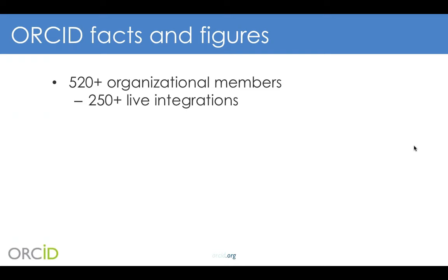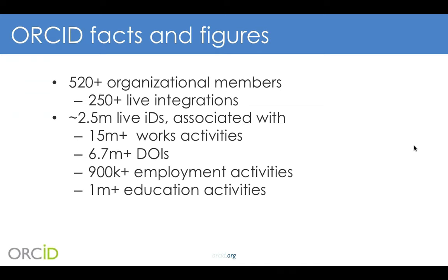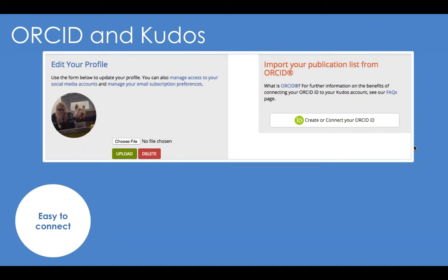On ORCID facts and figures: we now have over 530 organizational members and over 250 live integrations. As of last Friday, we cracked 2.2 and a half million live ORCID IDs, associated with well over 15 million works activities, close to 7 million DOIs, nearly a million employment activities, and over a million education activities.